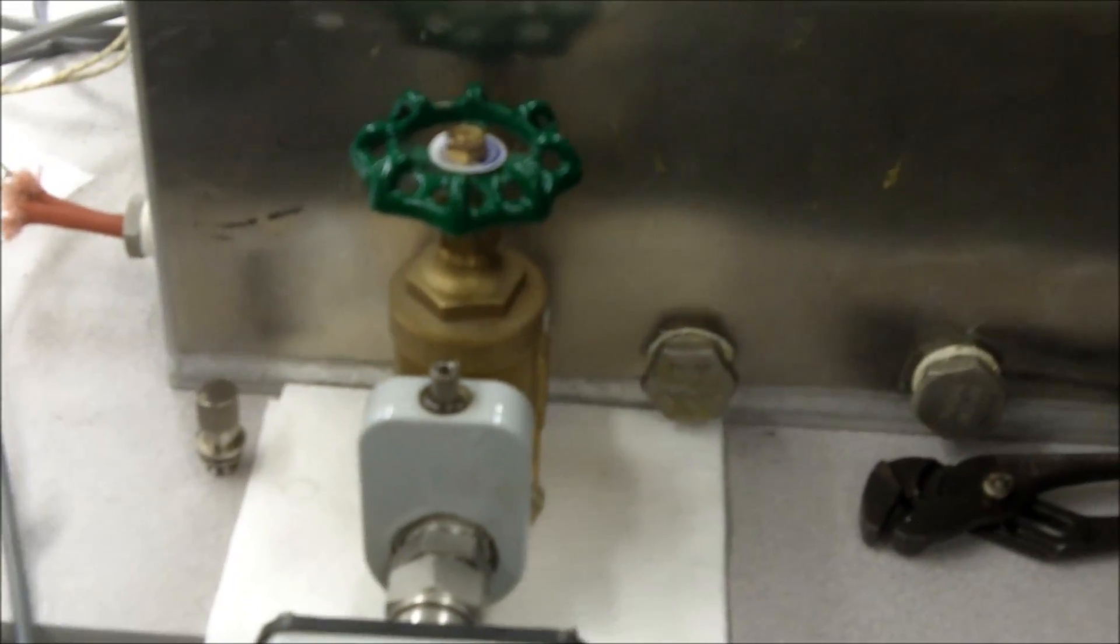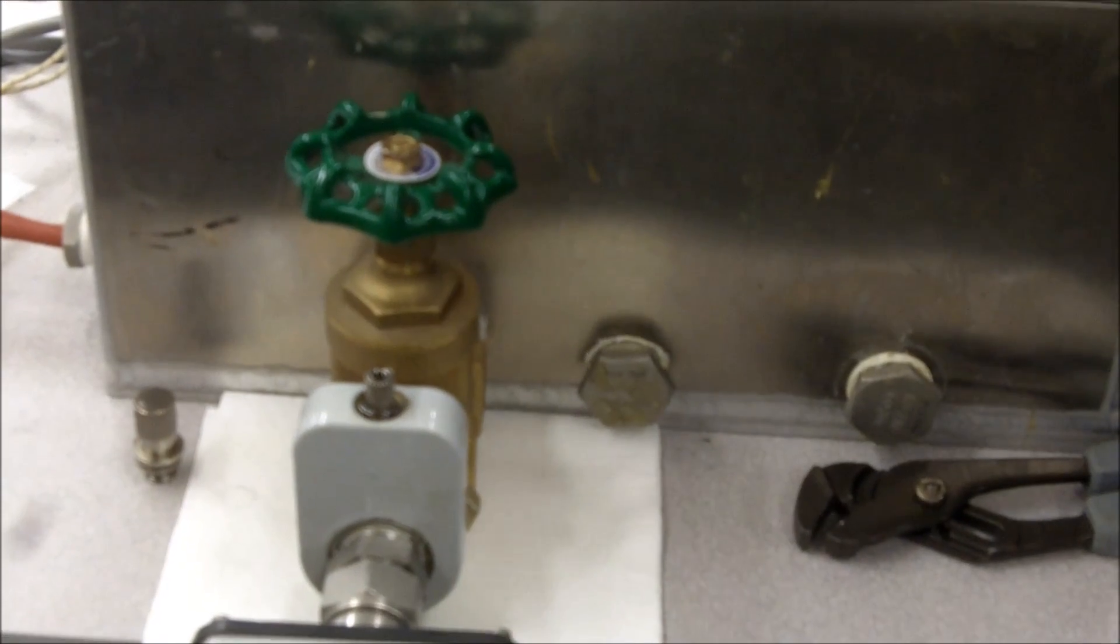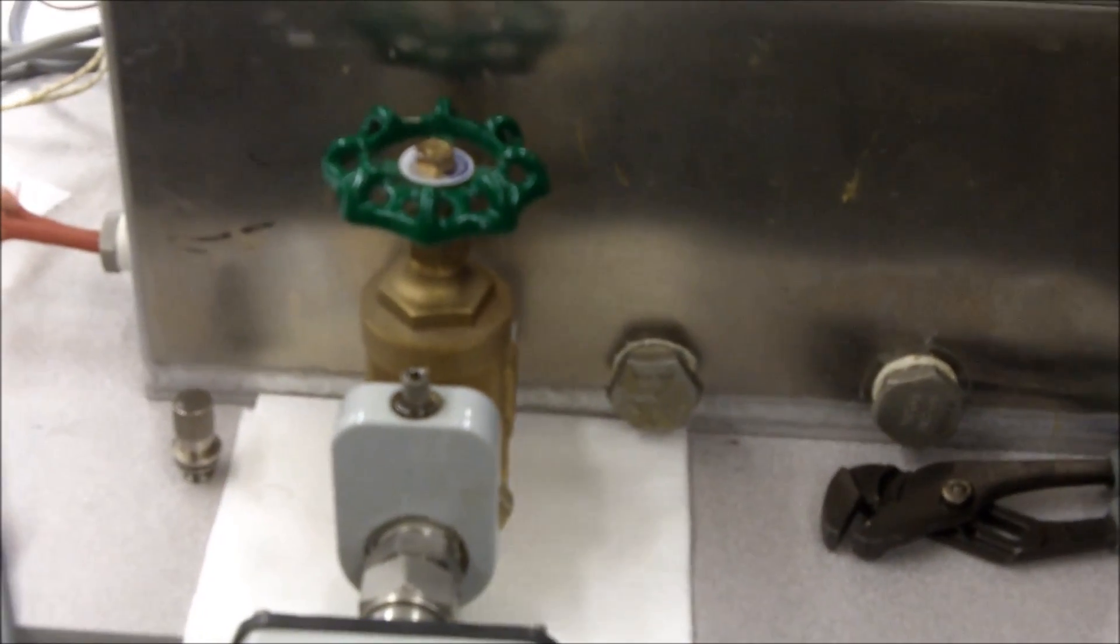You'll then close the sampling port on the DGA until hand tight. You never want to use a wrench and over tighten that port.